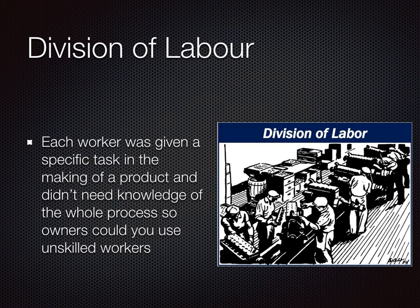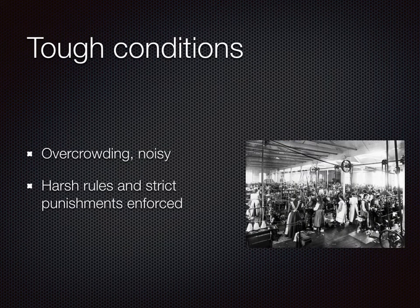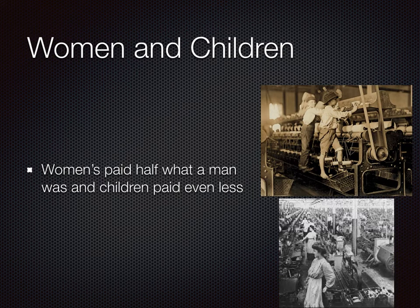Because of that, factory owners were able to use unskilled workers. You didn't have to be a very skilled person to operate one part of the assembly line. This use of unskilled workers gave the factory owner a massive amount of power, because he could easily replace them. Harsh rules and strict punishments were enforced. Factories were overcrowded and very noisy, and huge numbers of women and children were employed — primarily because women would be paid half of what a man was, and children even less.